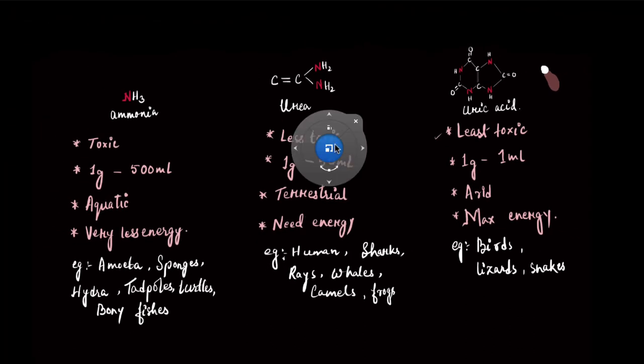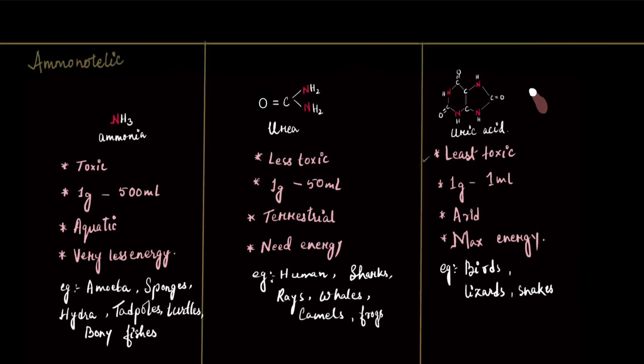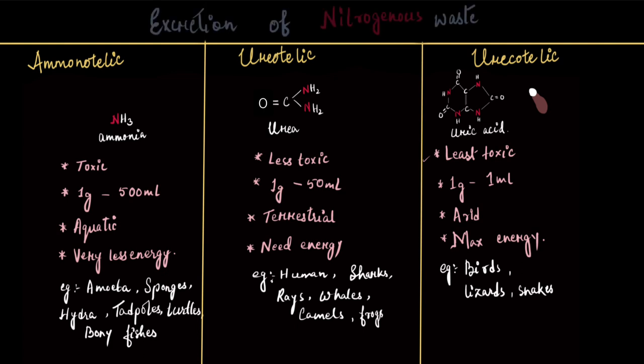Now the animals that excrete ammonia are called ammonotelic animals, and the process of excretion is called ammonotelism. But the animals are called ammonotelic animals. And the ones who excrete urea, that is you and me, we are called ureotelic animals, and the process is called ureotelism. And the ones who excrete uric acid are called uricotelic organisms, and the process is called uricotelism. And these are the three different strategies used by the living world to excrete nitrogen.